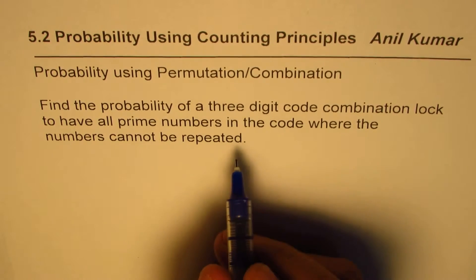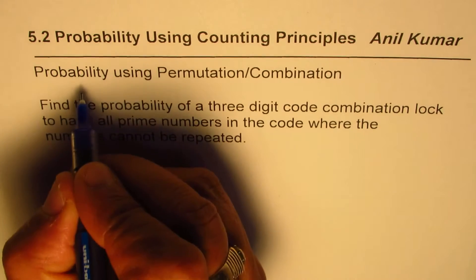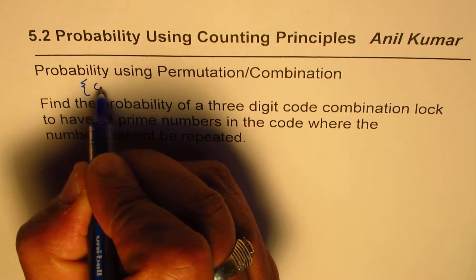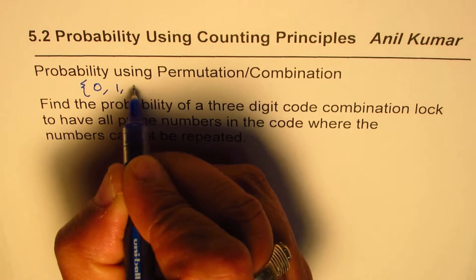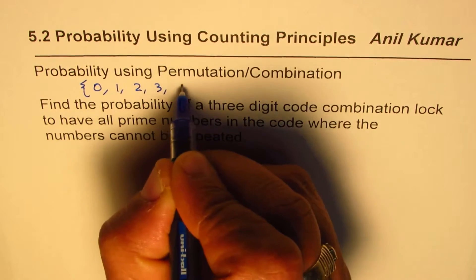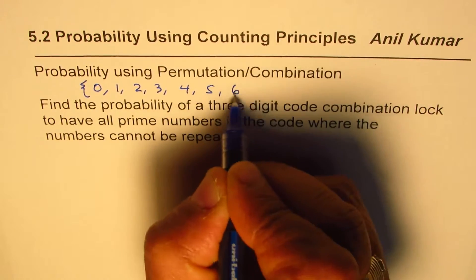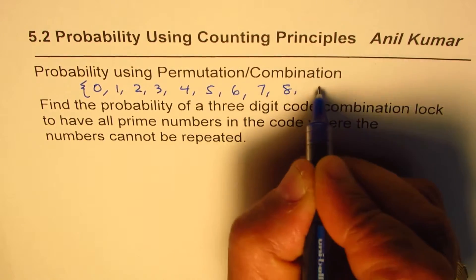In this case, we'll take the sample numbers to be from 0 to 9. 0, 1, 2, 3, 4, 5, 6, 7, 8 and 9.